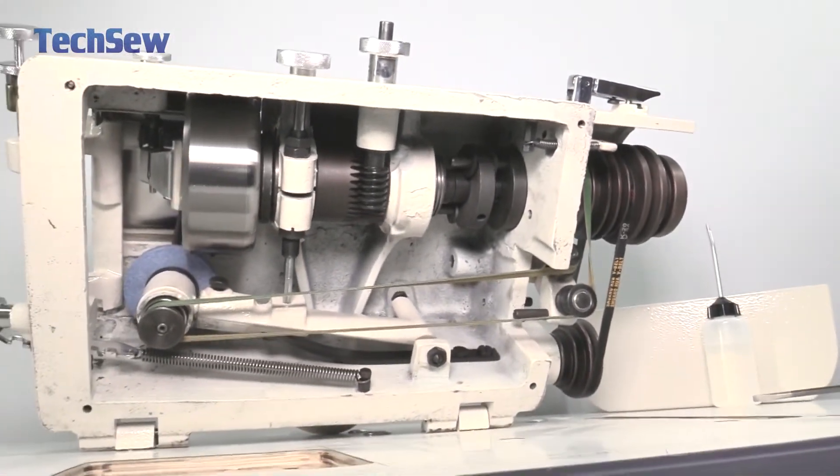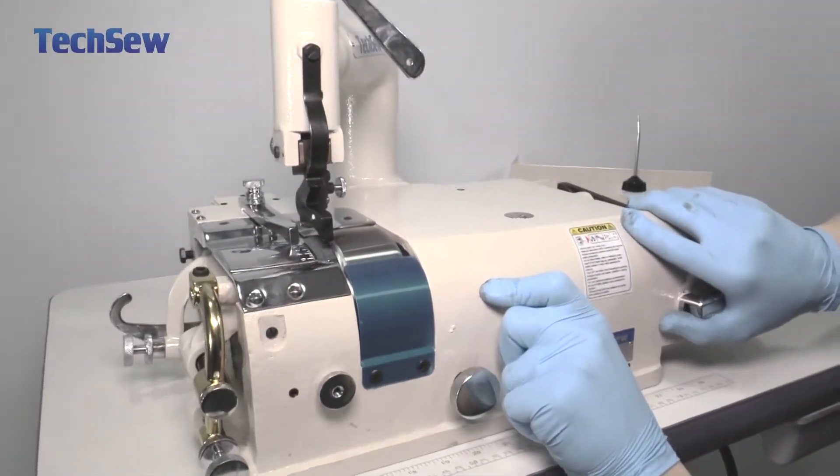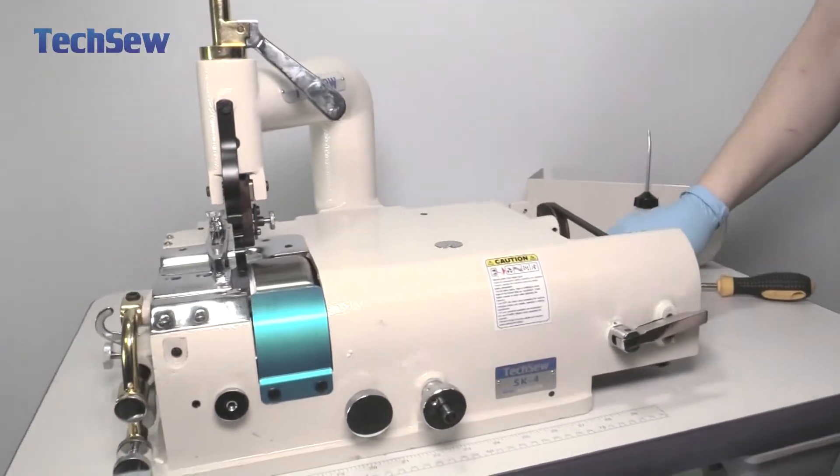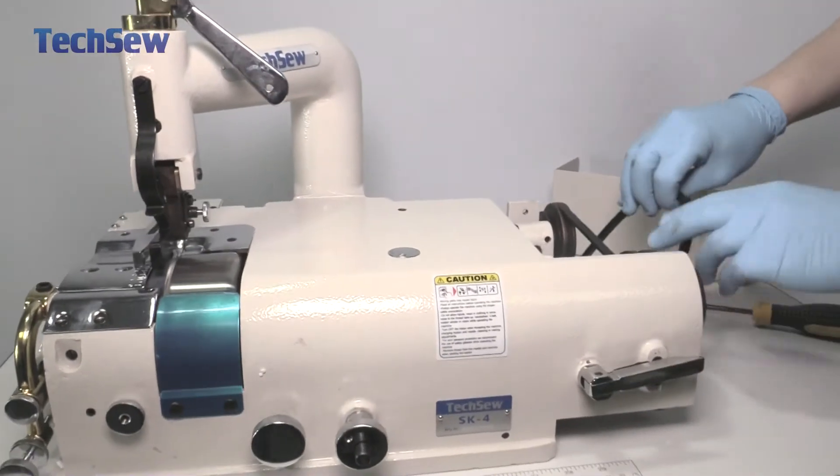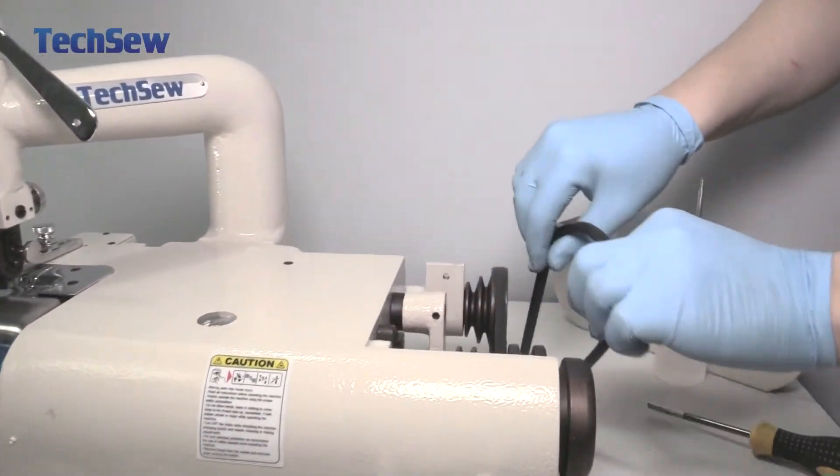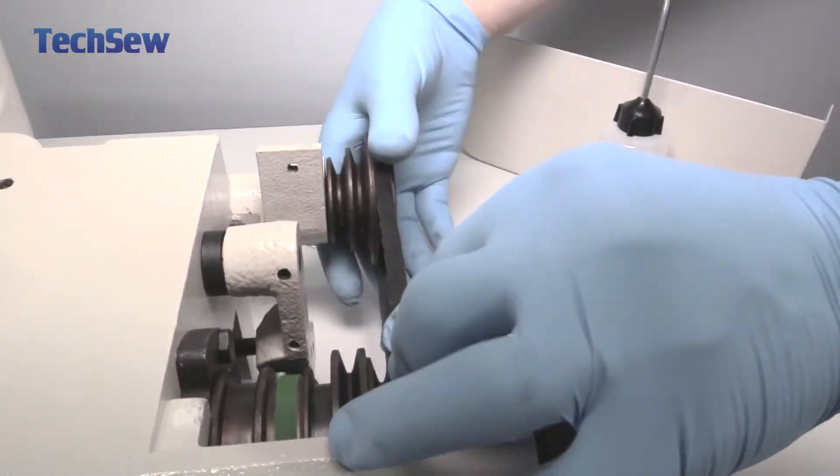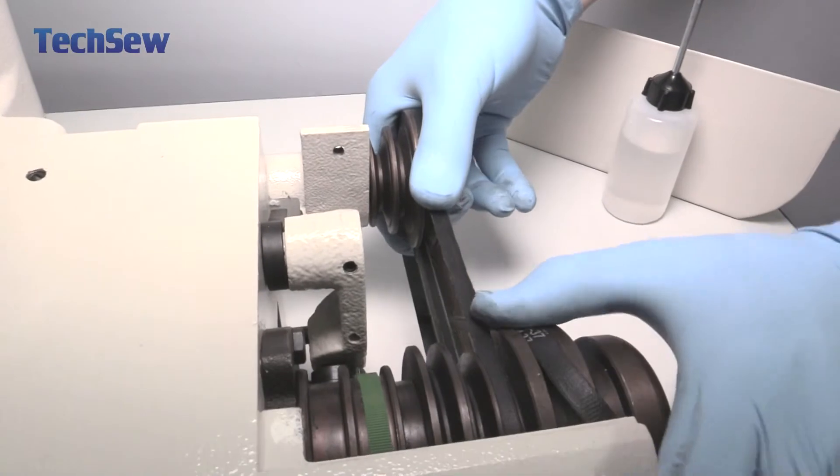After you are done greasing, gently lower the machine back down. We will reinstall the belt the same way we took it off. Make sure that the belt is on the motor pulley itself. Put it on the first pulley. Push it on to the second pulley.